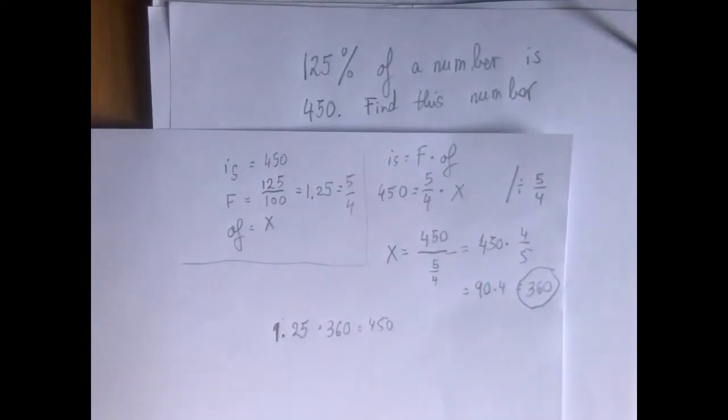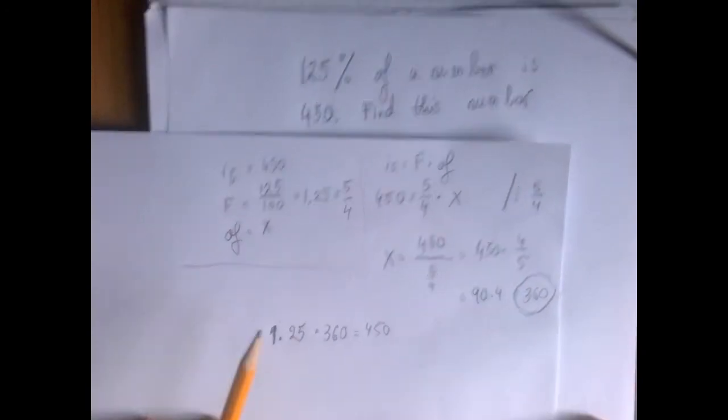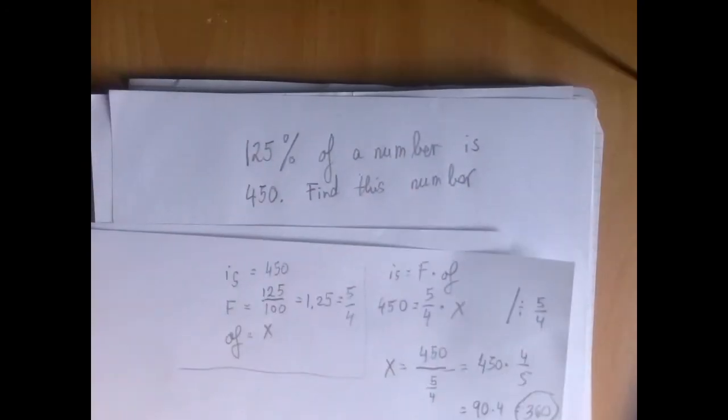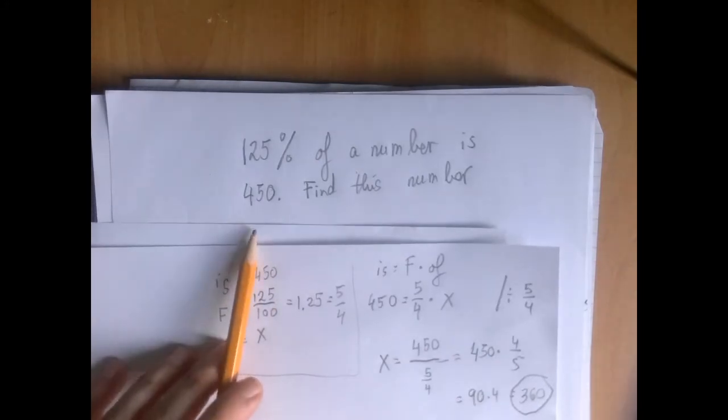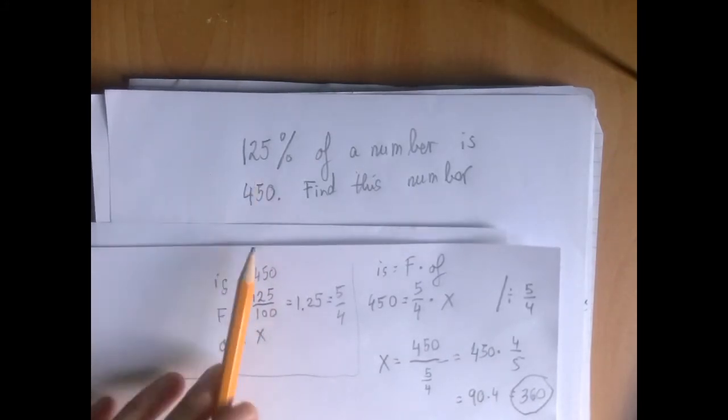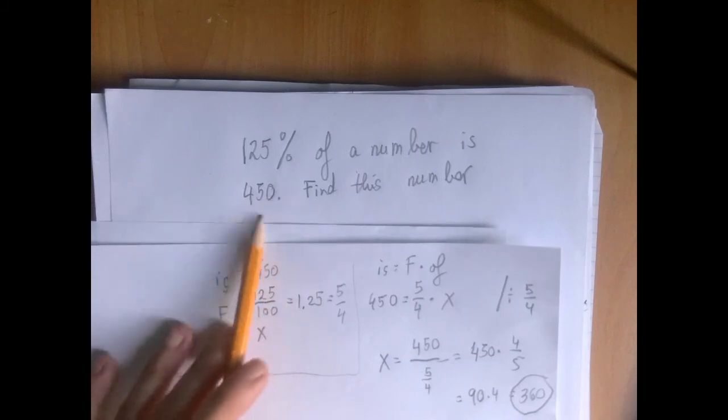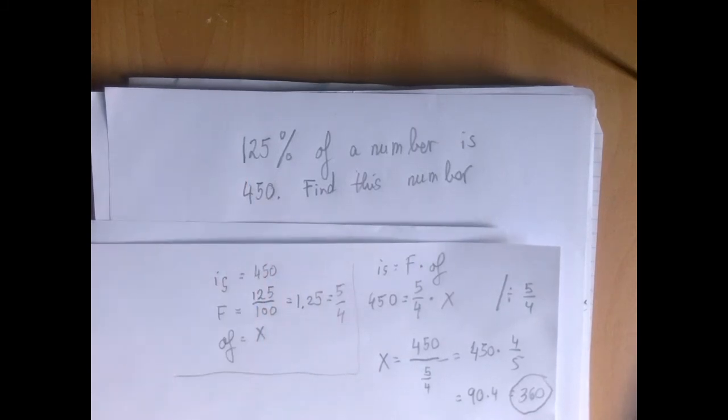The number we were looking for is 360. One more comment. A very common error is to say, well, we are given 450 is 125%. Why don't I just subtract 25%? Why don't I just take 25% of this number and subtract from 450?